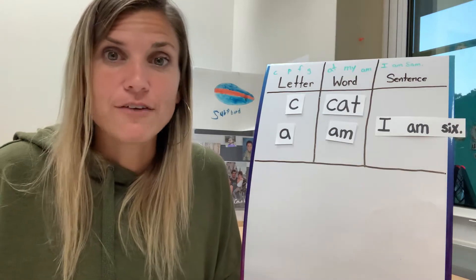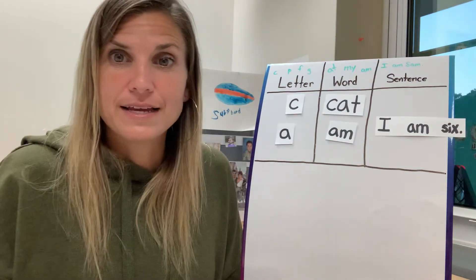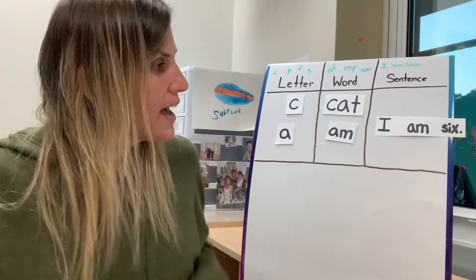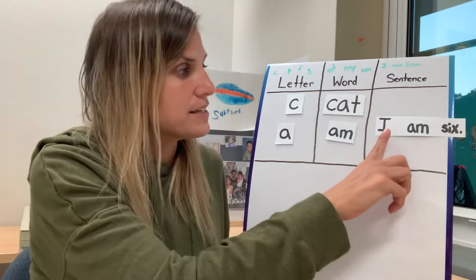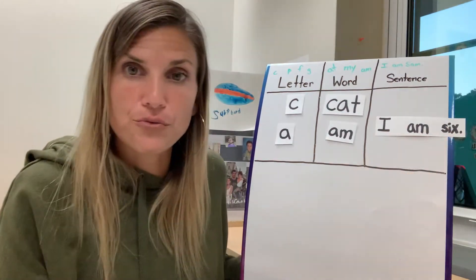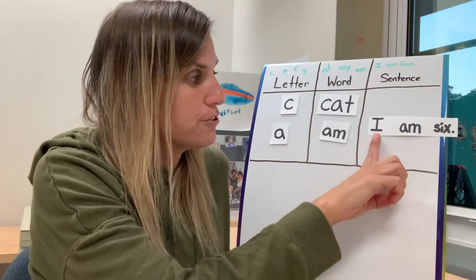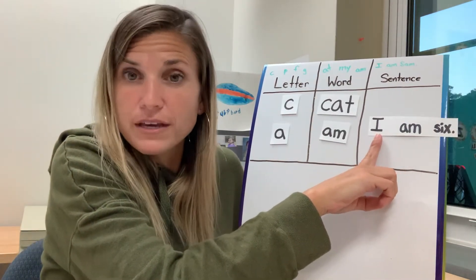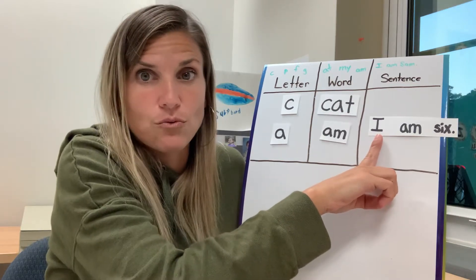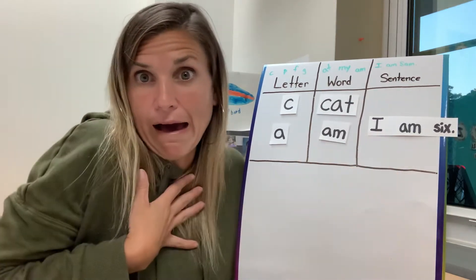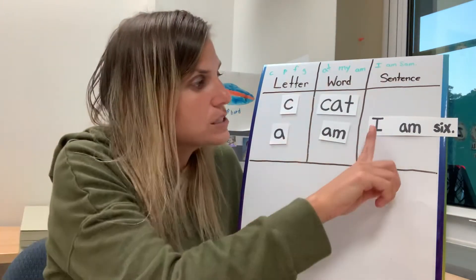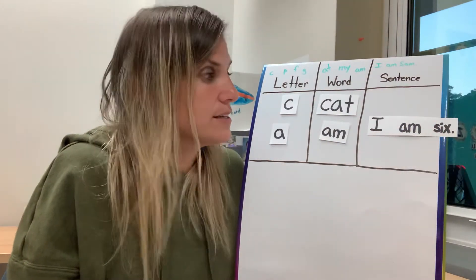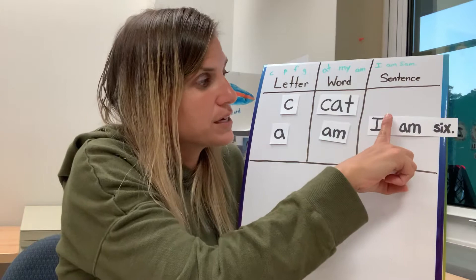Now if you put those words together, you have what's called a sentence. Our sentence has three words. The first word only has one letter — 'I' is special; it's a letter but it also is a word, like 'I am Miss Farrell.' So we have one, two, three words in this sentence.